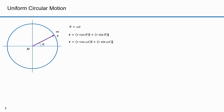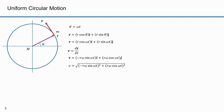I can substitute omega t for theta. Velocity is the derivative of position, hence velocity is tangent to the position function. In Part 18, I showed you how to take the derivative of the position vector R. V equals minus r omega sine(omega t) times i, plus r omega cosine(omega t) times j. The scalar v equals the square root of the sum of the squares of the x and y components, which reduces to r omega.